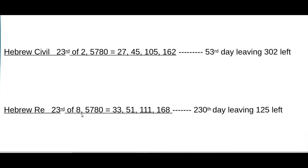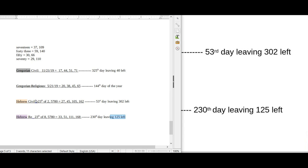So this is what you should have: Hebrew civil — 23rd of the 2nd, date numerology 27, 45, 105, 162, the 53rd day leaving 302 left. Hebrew religious — 23rd of the 8th, 33, 51, 111, 168, the 230th day leaving 125 left. That's all it takes, and once you have this down you can easily just start to copy and paste it every day.